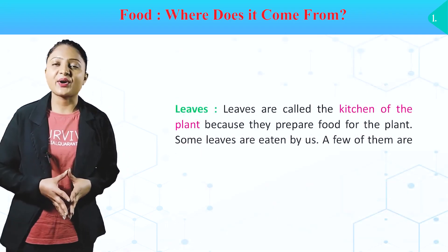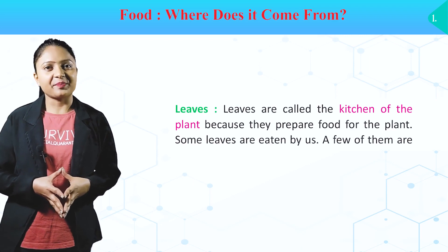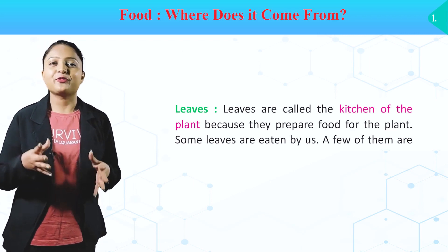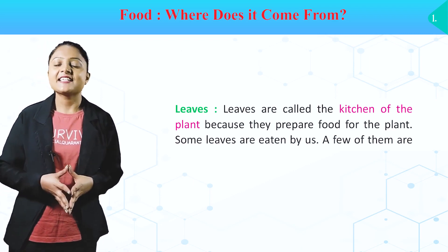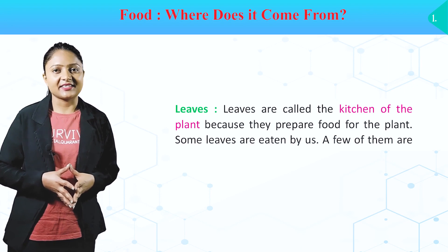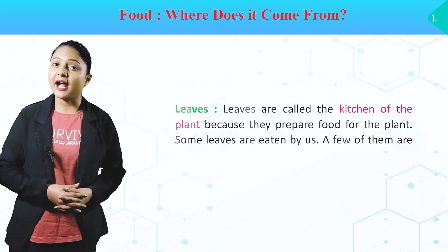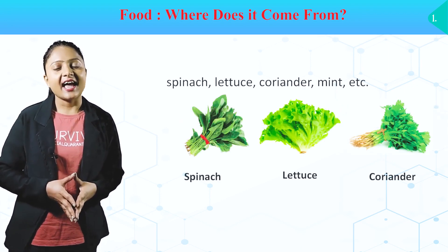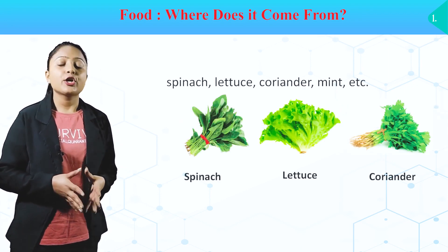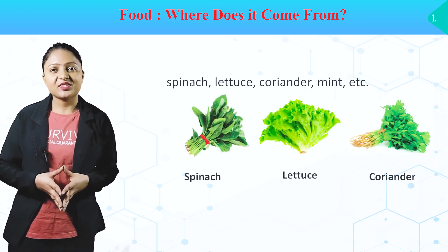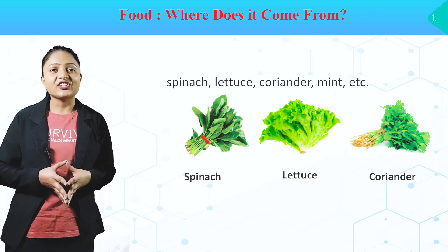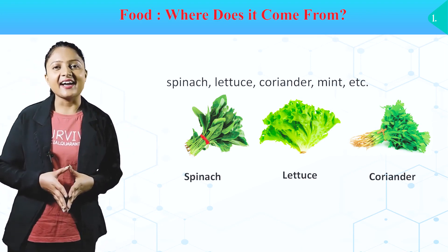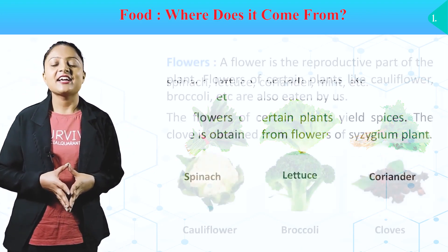Leaves. Leaves are called the kitchen of the plant because they prepare food for the plant. Some leaves are eaten by us. A few of them are spinach, lettuce and coriander. Toh hum kuch leaves ko bhi khate hai — spinach, lettuce and coriander.